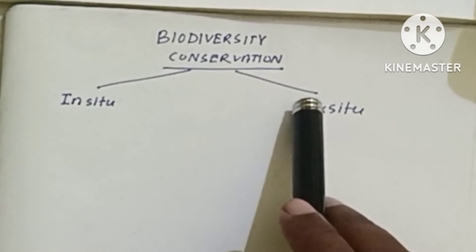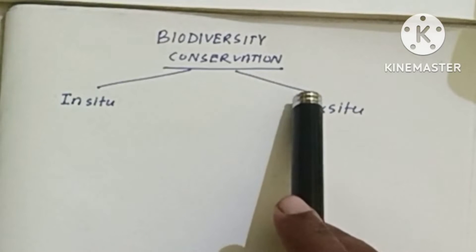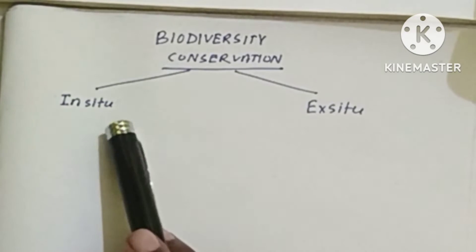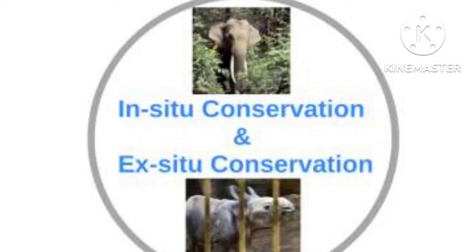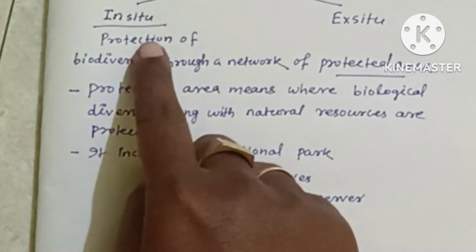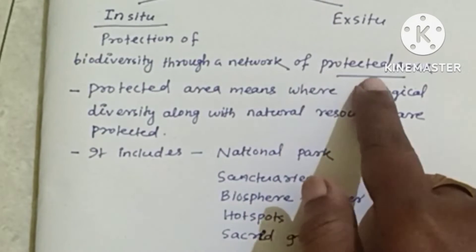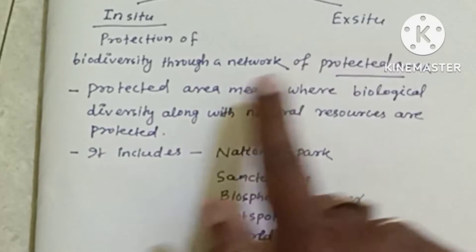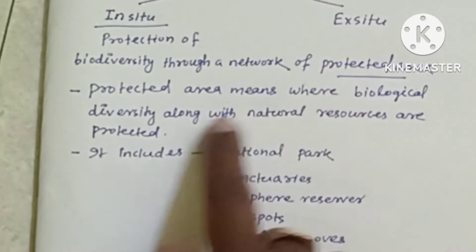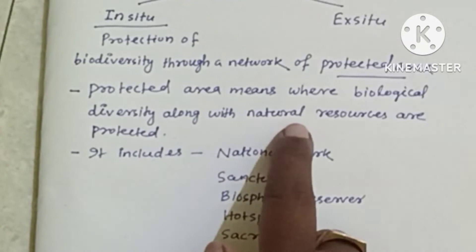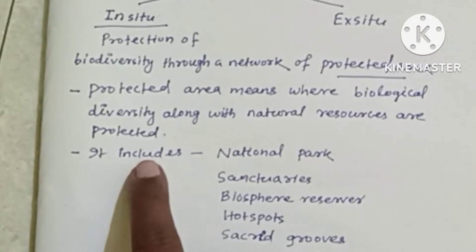Biodiversity conservation occurs by two methods: in-situ conservation and ex-situ conservation. In-situ conservation means protection of biodiversity through a network of protected areas. A protected area is where biological diversity along with natural resources are present.